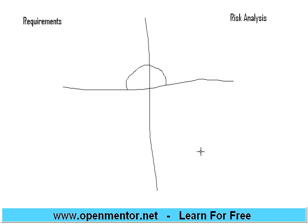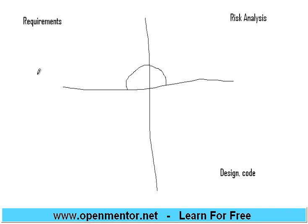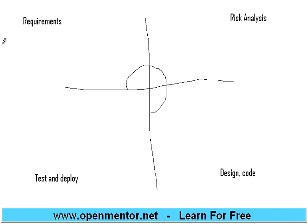Once the risk analysis is done, after that it is standard - like design, code. This is standard. Once risk is evaluated, based on that, then after that you code, then after that you test and deploy. So what happens is we take a set of requirements, then we finish this. Assume that 200 requirements we have taken from the customer, we have done requirements analysis, then risk analysis, design and code, test and deploy.